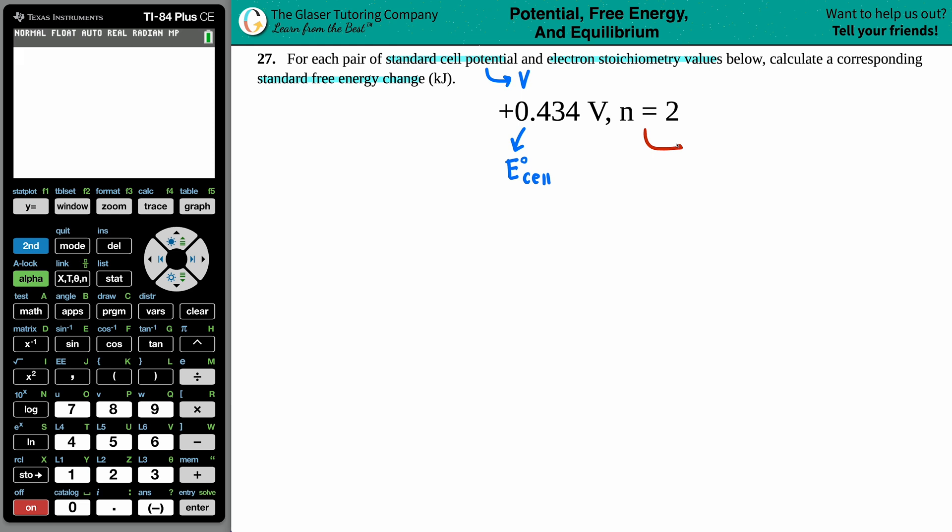Now what does this n value mean? Well, remember usually n means moles, but since we're talking about oxidation reduction reactions - cell potentials are always redox reactions - this n value goes a little bit deeper. It actually tells us the amount of moles of electrons, and specifically it's the amount of moles of electrons that are being transferred from the oxidant to the reductant.